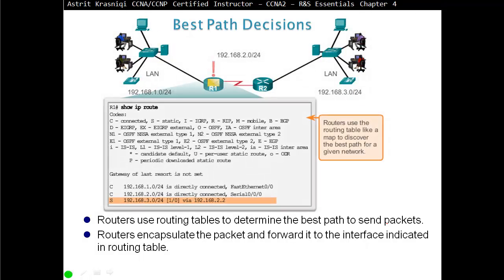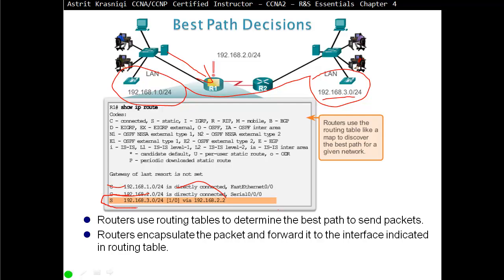Looking at this example: a packet arrives on Router 1 from 192.168.1.10 destined for 192.168.3.0. The router reads the destination, checks the routing table, finds no directly connected match, but finds a static entry matching the destination. It determines it must go via 192.168.2.0, does a second lookup, and finds it should use serial 0/0/0. It encapsulates the packet and forwards it toward Router 2.